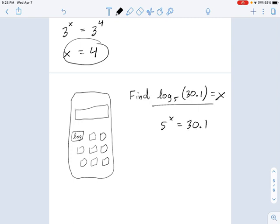You say 5 to the x equals 30.1. But pretty soon, you ought to realize, well, there is no way you're doing this in your head. So time to bust out the calculators.